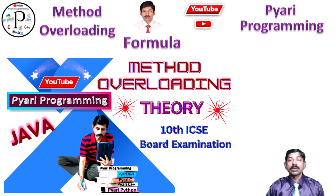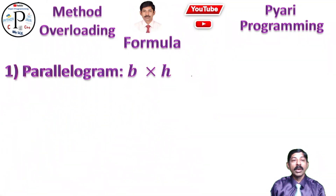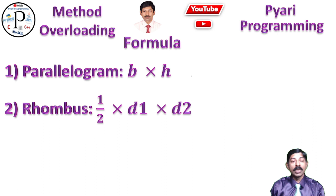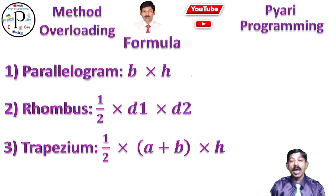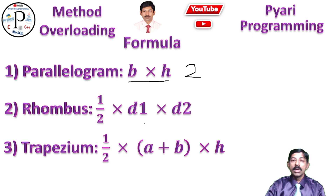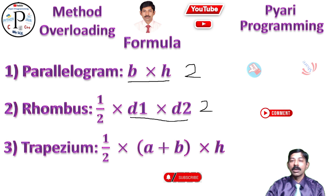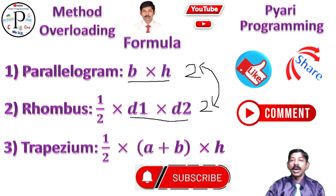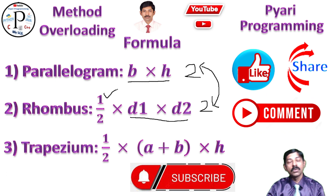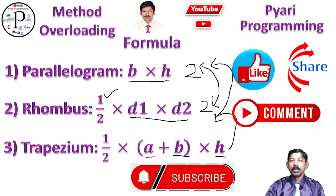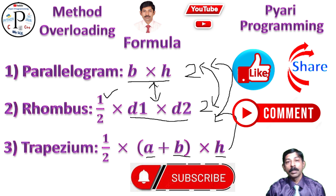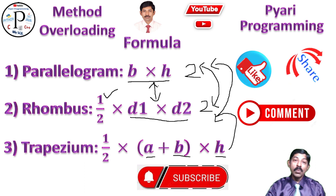How we can distinguish the parameters — we will decide using the formula. Parallelogram formula is base × height (two variables). Rhombus formula is half × diagonal1 × diagonal2 (also two variables) — here there is a risk, meaning these two methods' data types must be different. Trapezium formula is half × (a + b) × h, which has three parameters. So the number of parameters differs between trapezium and the other two — no issue there. The problem is between parallelogram and rhombus: same number of parameters, so we will change the data type.